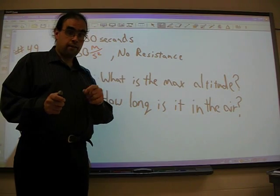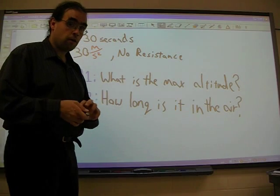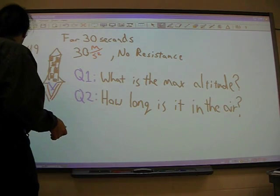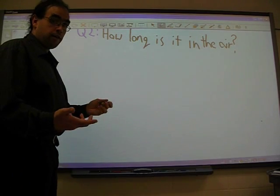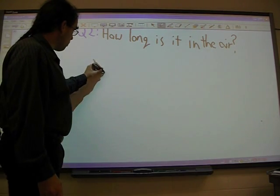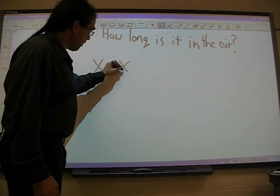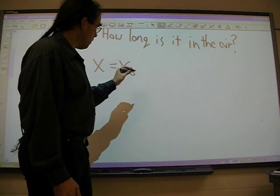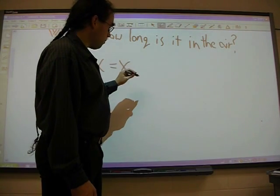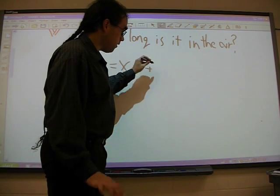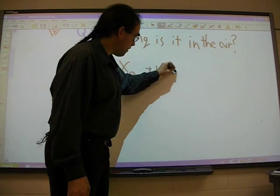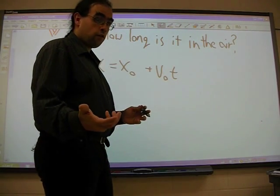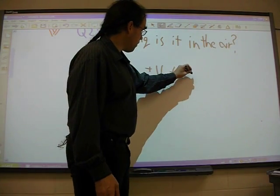Phase three begins when we have zero velocity and we enter our free fall return back to Earth. And the sum of these three times is how long it's in the air. We can find out the maximum altitude at the end of our phase two calculation. And for solving this, you can actually combine phase two and phase three, but I think it's easier to break them up and do them all individually.